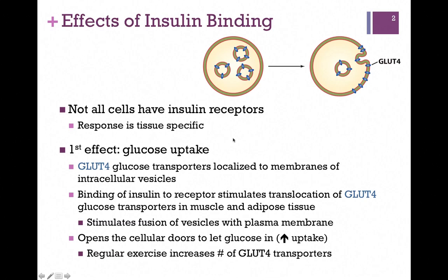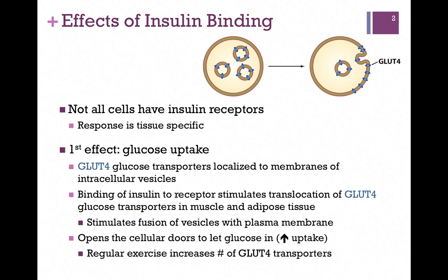The binding of insulin to the receptor stimulates the translocation of these GLUT4 transporters in muscle and adipose tissue so that they're put on the surface of the cell. This is another example of the fusion of vesicles with plasma membranes. We thereby put these GLUT4 receptors on the surface — in essence, we're opening the cellular doors to let glucose in, putting more doors on the surface of the cell, and rapidly uptaking glucose to lower blood glucose levels.